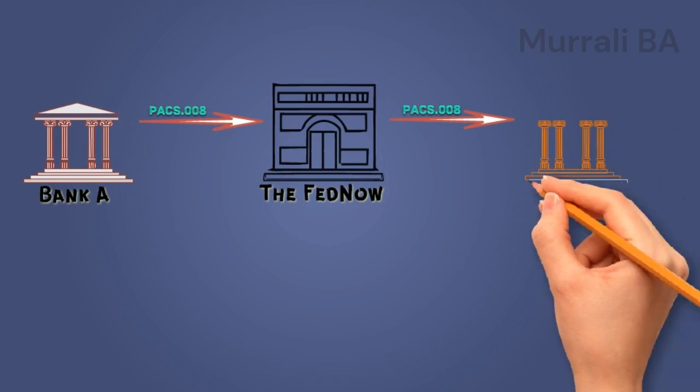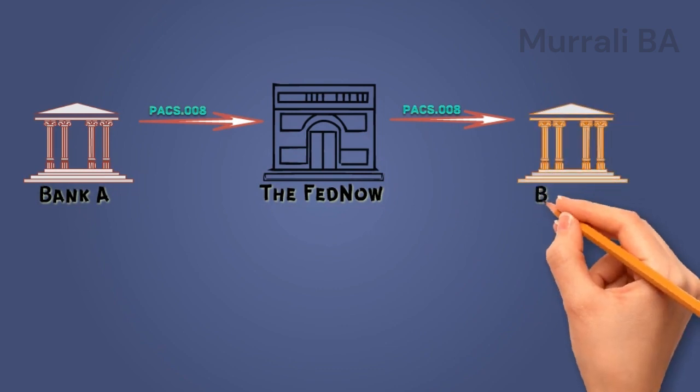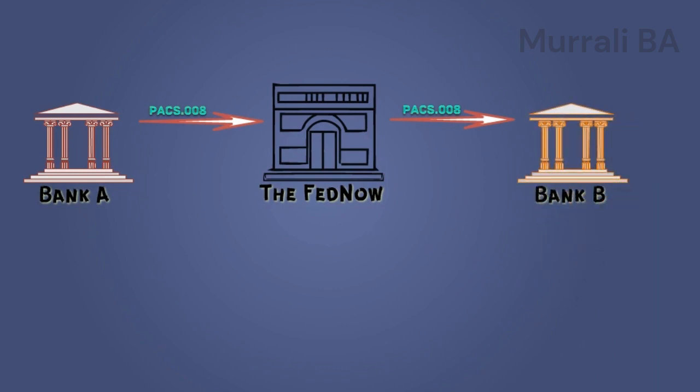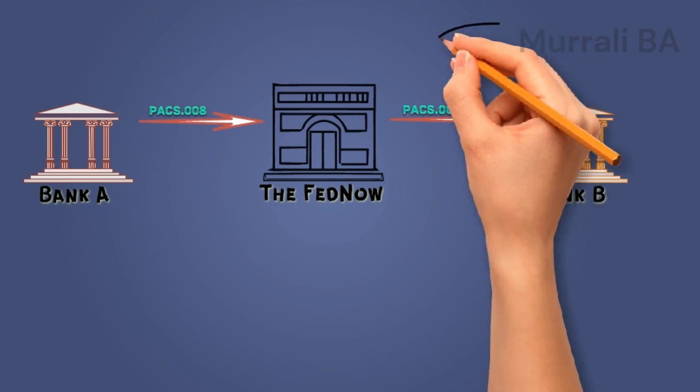Now the ball is in Bank B's court. They have to respond quickly and the response should reach FedNow within 5 seconds. So they are forced to take a decision quickly, which might result in fraudulent transactions getting processed. Remember that FedNow is an irrecoverable payment — so once it is credited to the beneficiary, it cannot be forcefully debited back and a return request is also not guaranteed.